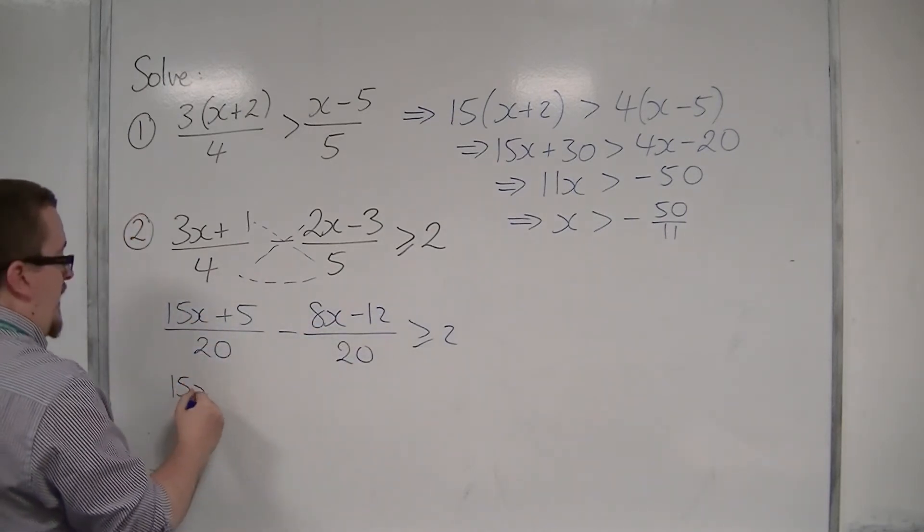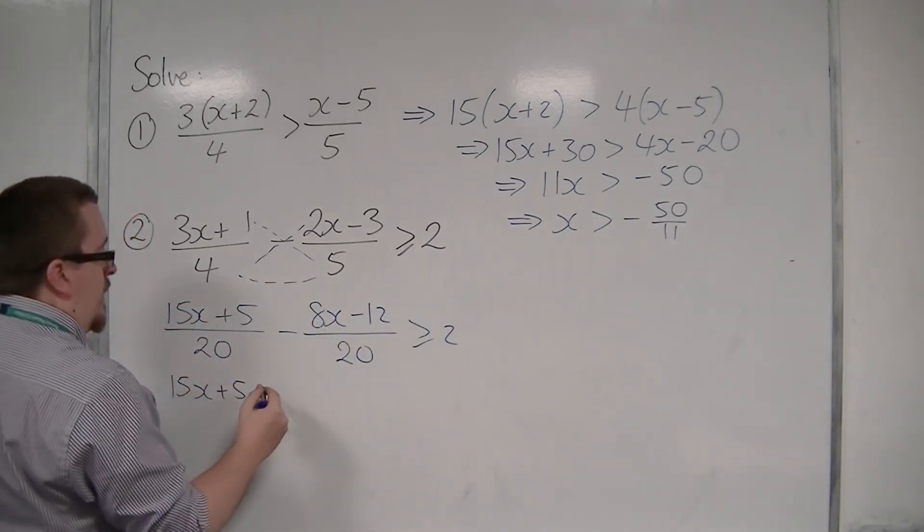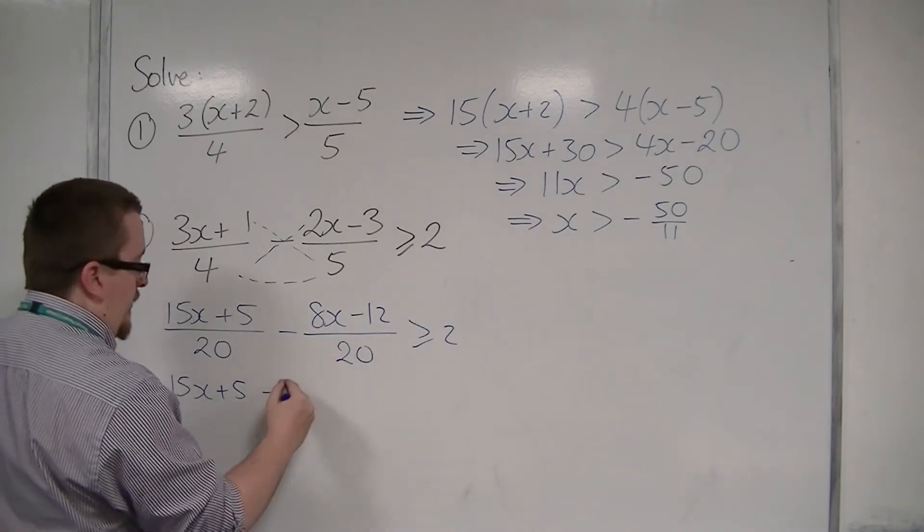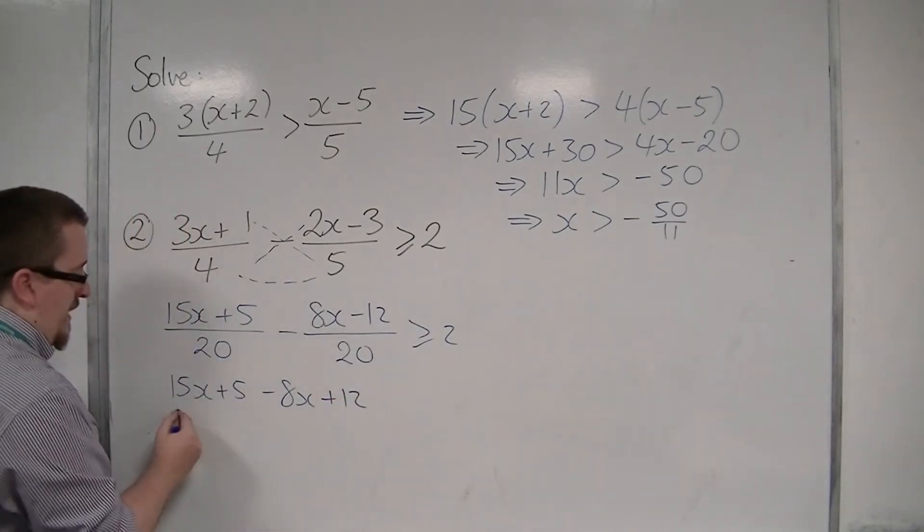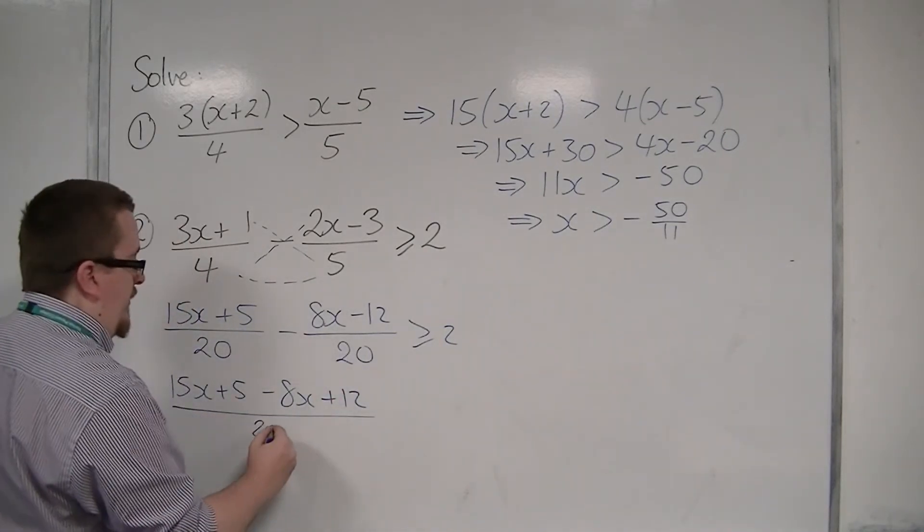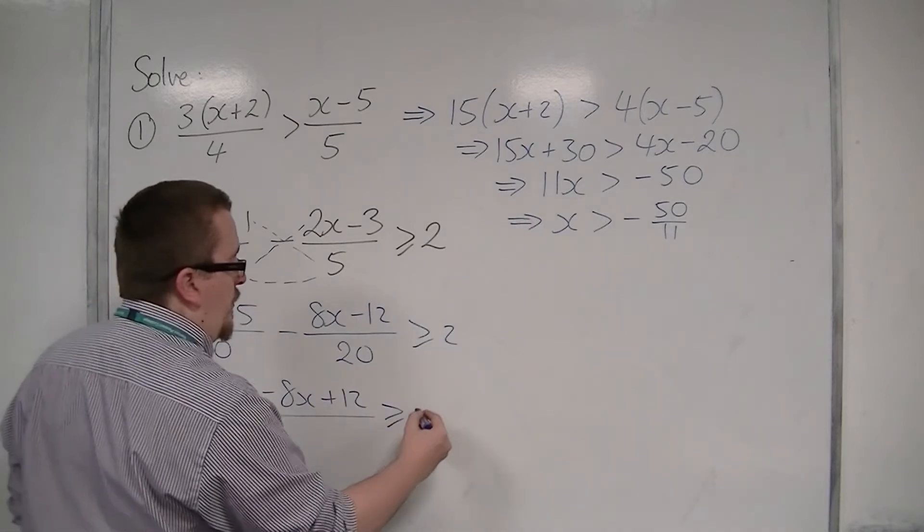and write that as 15x plus 5, take away 8x, take away minus 12. So that's plus 12 now, the two minuses. That's usually where students go wrong.